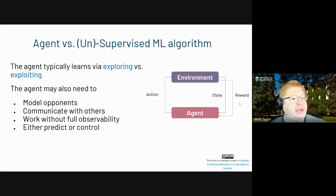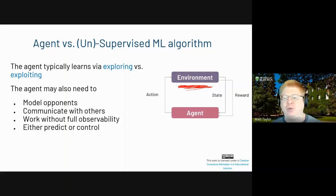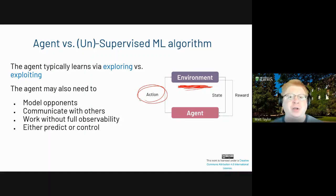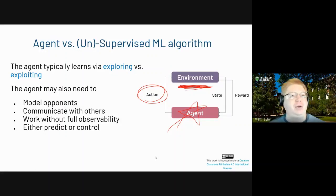Natural language processing can be useful for reinforcement learning. You can use RL to help process natural language, or you can think of natural language as the state of the world. For example, a chatbot agent trying to interact with a person — the state of the world might be the words that person said. You could also model opponents, communicate with other agents on your team, or think about coordination among agents that aren't on your team but where communication could be mutually beneficial.